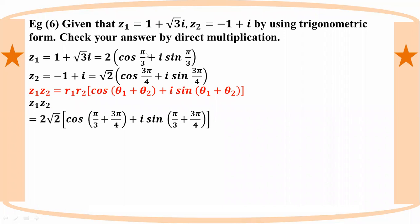So we write the result with R1, R2 giving us the modulus. Combining the radii gives 2 root 2, and we need to write the combined angle in the trigonometric form of the product.